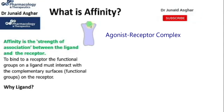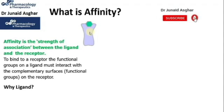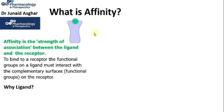In this complex, the functional groups on the agonist have bound to the specific binding domains on the receptor protein. These binding domains, or pockets on the receptor, are usually different amino acid residues. For those interested in the molecular aspects of this pharmacodynamic concept, let's go into further details of what exactly happens in such agonist-receptor interactions.